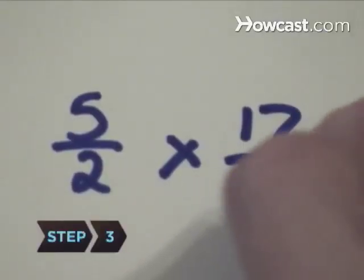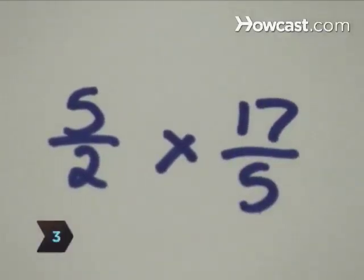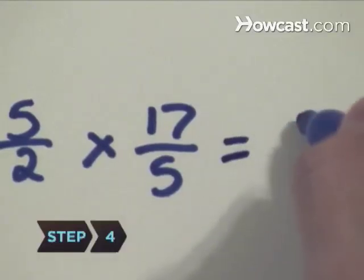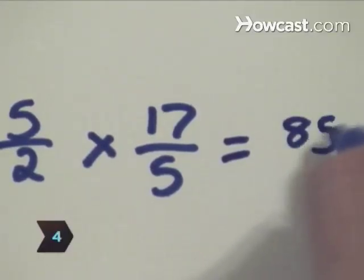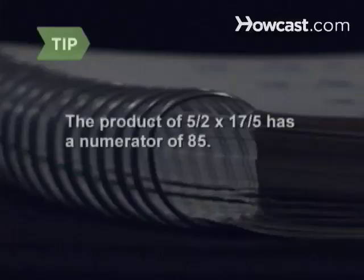Step 3: Write the improper fractions side by side on your paper. Step 4: Multiply the numerators and write the product as the numerator of your solution. The product of 5 halves times 17 fifths will have a numerator of 85.